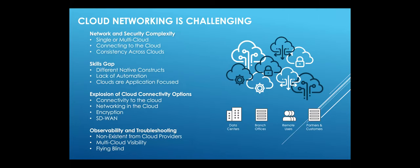82% of organizations say their ability to migrate apps to the cloud is hindered by the increased complexity of their network infrastructure. It's not a single vendor — it's multiple vendors, multiple interfaces, and different management tools. Operationally, visibility has not really been solved for until recently. Aviatrix CoPilot is a great example — having that end-to-end visibility across multiple clouds, data centers, and branches really helps simplify observability.